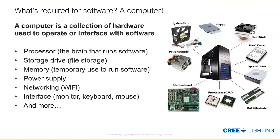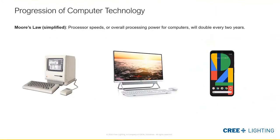Ultimately you need some way to interface with it — you can't just take a tower and do something with it. You've got to hook up a monitor, a keyboard, a mouse. Increasingly we're using microphones to talk to our computers or phones. All of these come together to give us a device we can use to operate software — to check email, run an internet browser, or work on an Excel file.